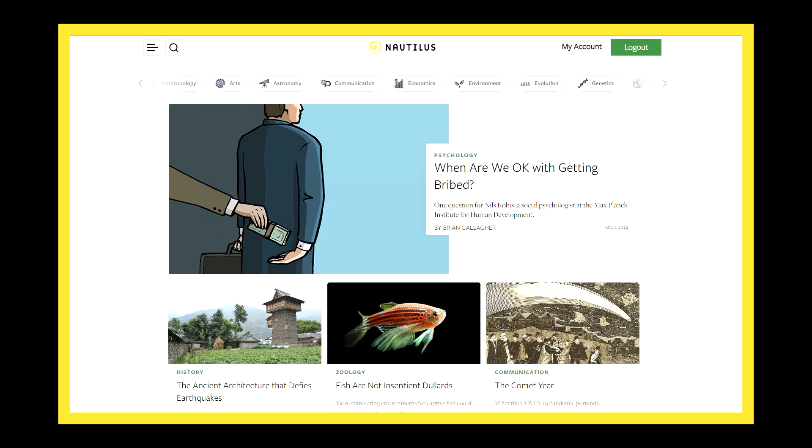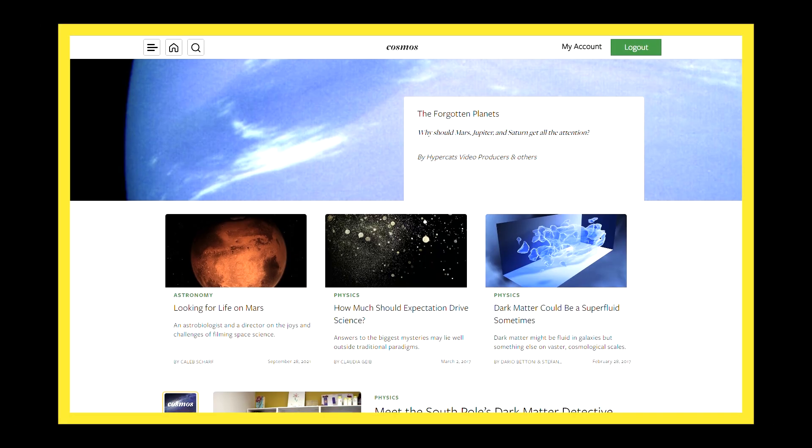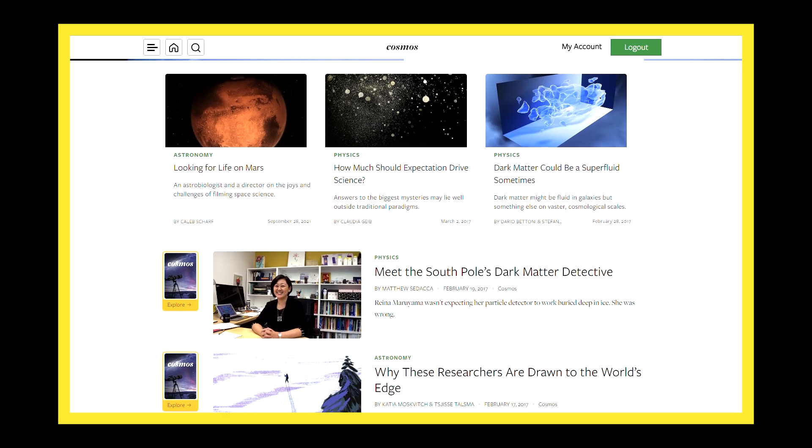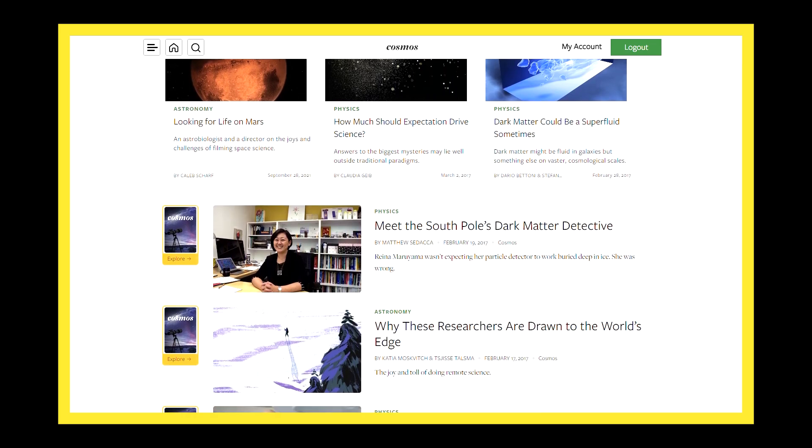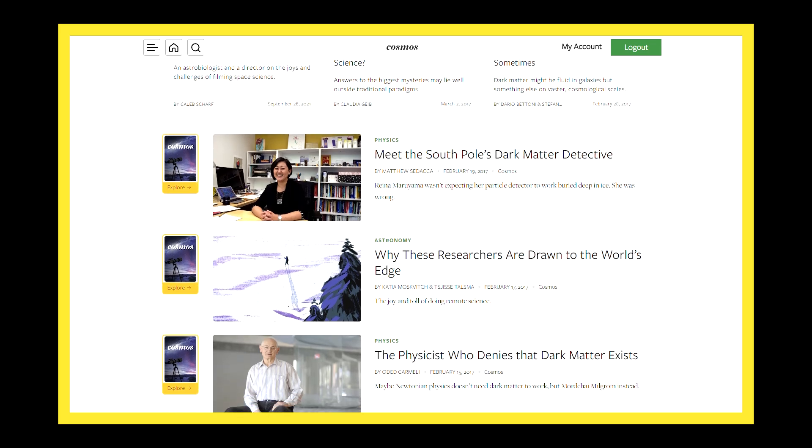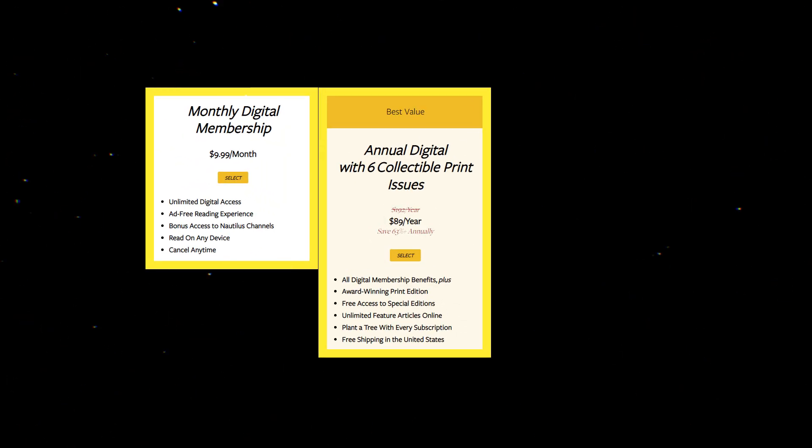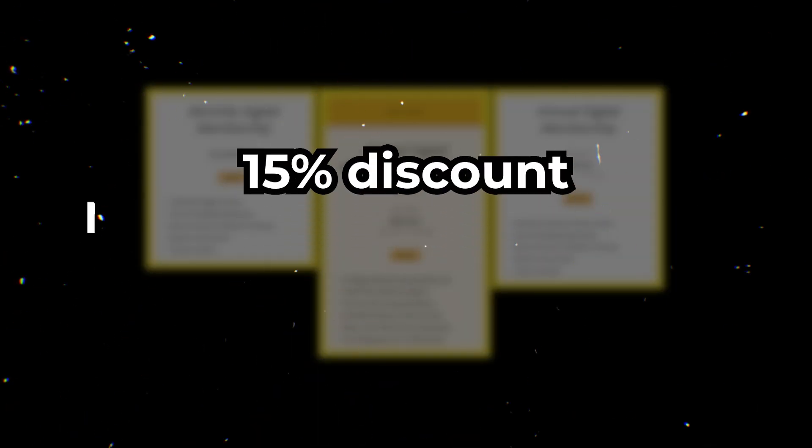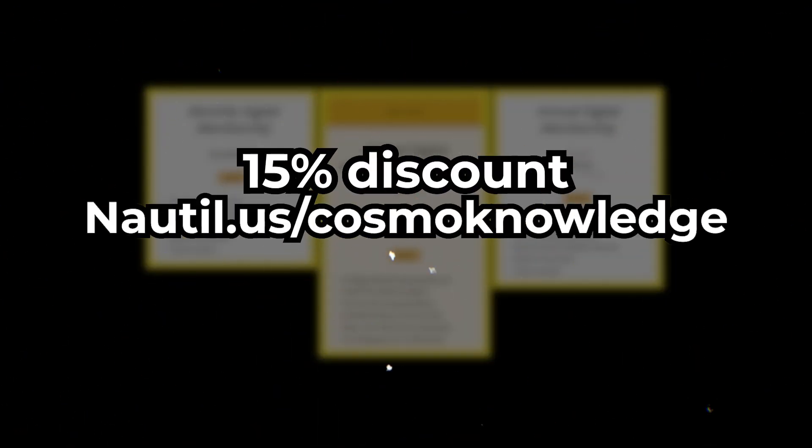As a Cosmonology subscriber, you'll be particularly fascinated by their Cosmos section, which delves into intriguing subjects like dark matter, astrobiology, and space entrepreneurship through captivating stories and insights from the world's leading scientists. Choose between a digital-only membership or a print option to receive six stunning, award-winning collectible editions that'll elevate any home library. Memberships rarely go on sale, but you can enjoy a 15% discount by visiting n-a-u-t-i-l dot u-s slash cosmonology. Don't miss this opportunity to join the Nautilus community today.